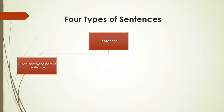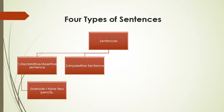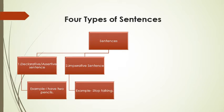They are: number 1, a declarative or also called an assertive sentence. For example, 'I have two pencils.' Number 2, an imperative sentence. For example, 'Stop talking.'